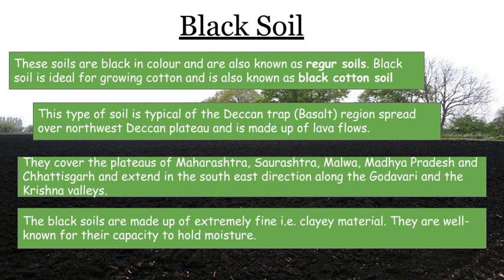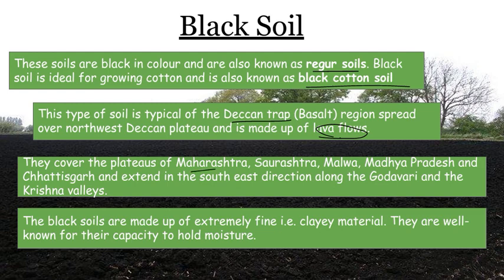Next comes black soil, which has three names: regur soil, black cotton soil, and black soil. It is called cotton soil because it is an ideal and perfect soil to grow cotton. Black soil is found in the Deccan Trap region where there is lava flow. It is also found in Maharashtra, Saurashtra, Malwa, Madhya Pradesh, and Chhattisgarh.